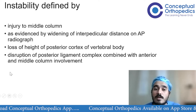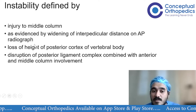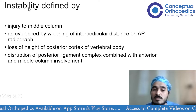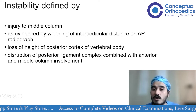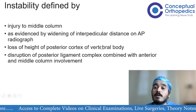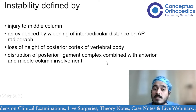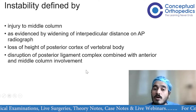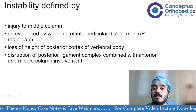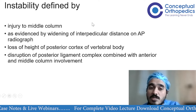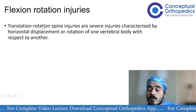Additional criteria for instability include: widening of the inter-pediculate distance on AP X-rays, loss of height of the posterior cortex of the vertebral body on lateral X-ray indicating middle column involvement, and disruption of the PLC complex along with anterior and middle column involvement. These criteria help determine whether an injury is stable or unstable.